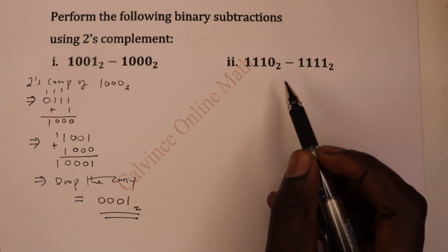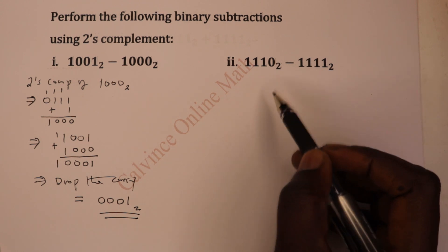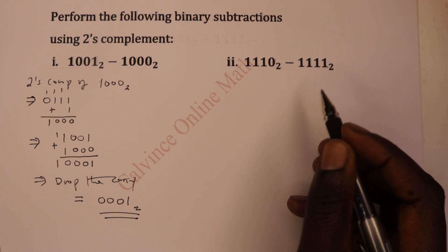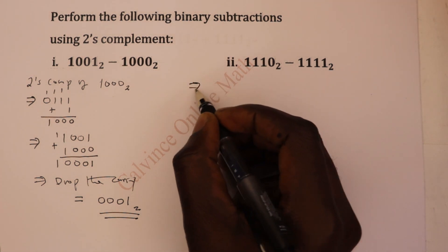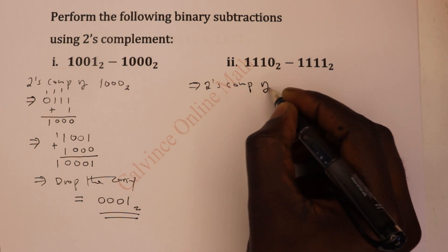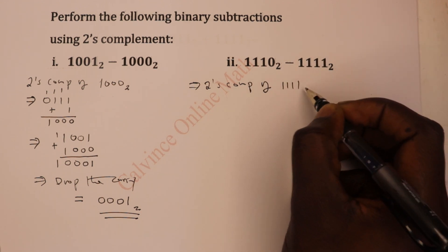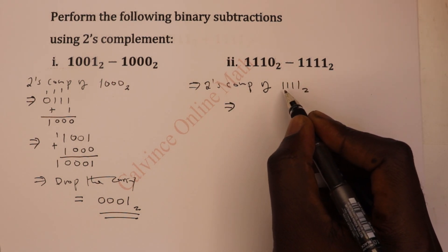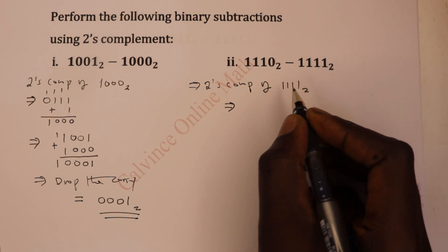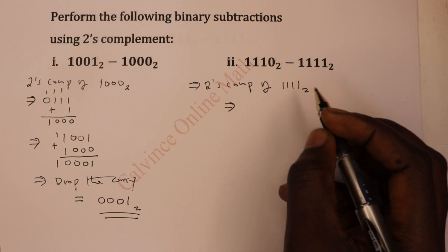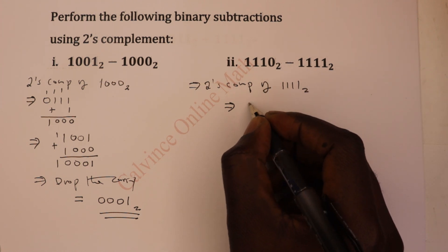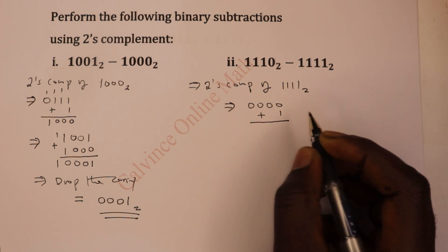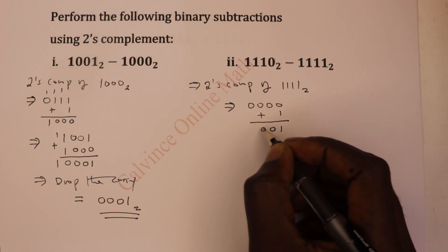In the second case, we have a situation where the subtrahend is bigger than the minuend — you are subtracting a bigger number from a smaller one. The first thing to do is get the two's complement of the subtrahend. As we did in the first example, that involves inverting the bits and then adding 1. In our case we only have 1s, so inverting gives 0, 0, 0, 0. Then we add 1 to get the two's complement: 1, 0, 0, 0.